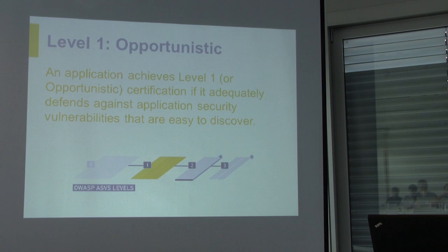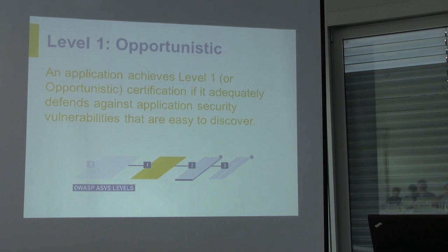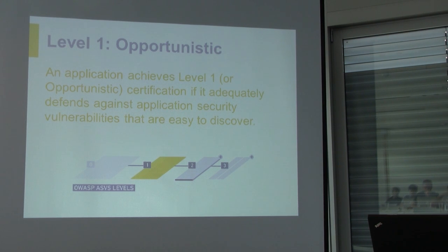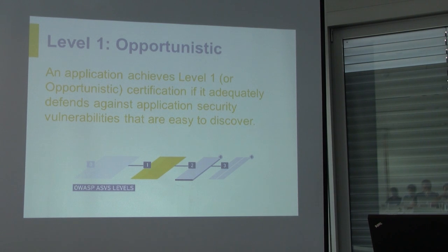The term 'opportunistic' means things that are prevalent but also easy to discover. If you're putting all of your applications through level one at a minimum, you want to be looking for the types of things that are actually happening in the industry and that have a lower barrier to testing. If level one took ten days per app, you'd never get through all your applications. So we had to make sure level one wasn't too heavy so it would be adopted. I won't go through the exact requirements list, but you can grab the standard — there's a link in the presentation.